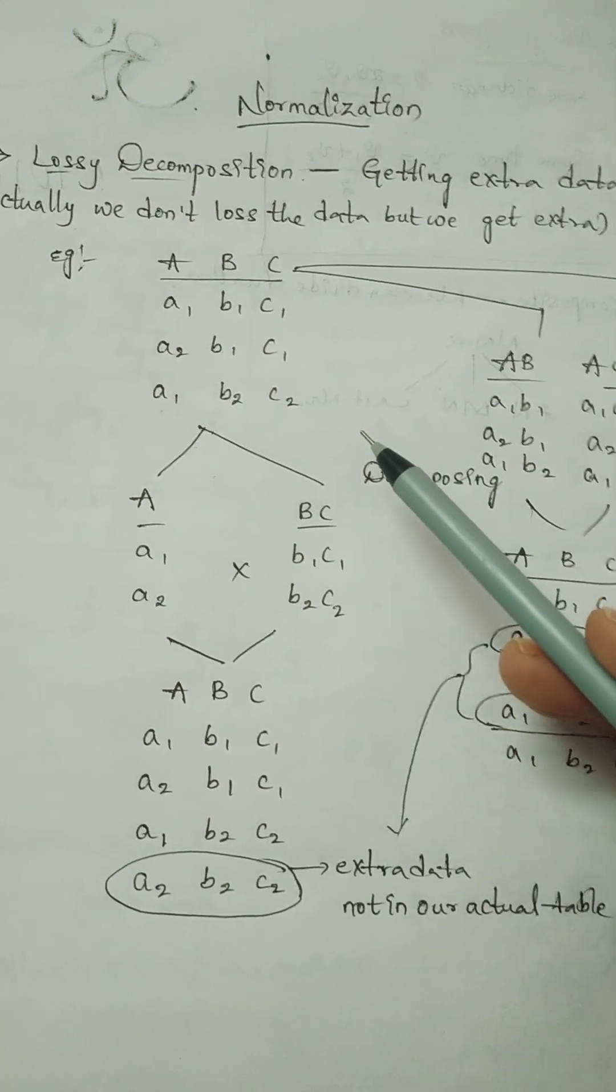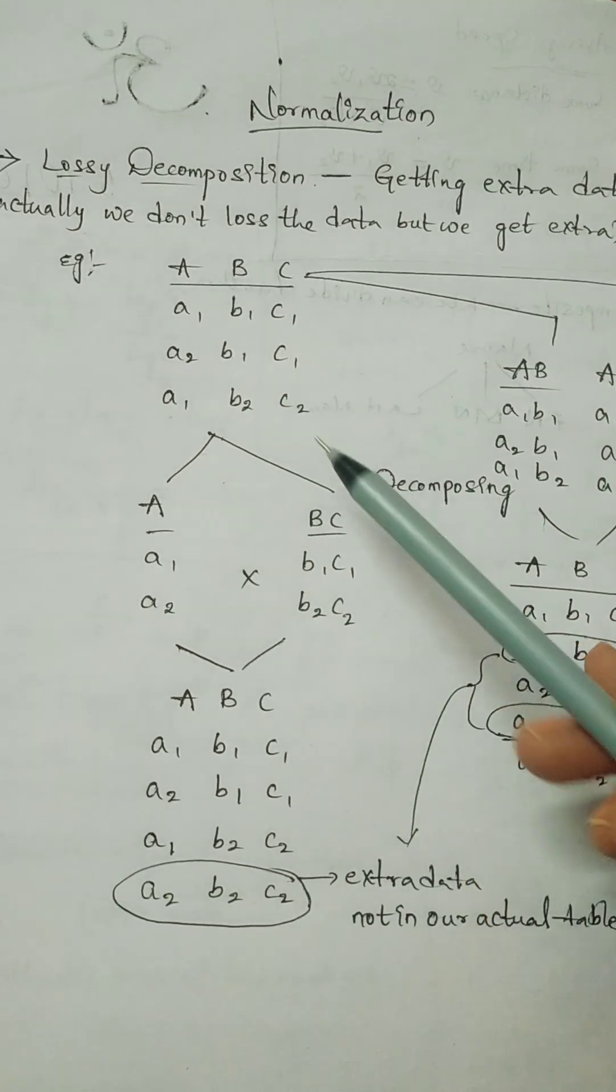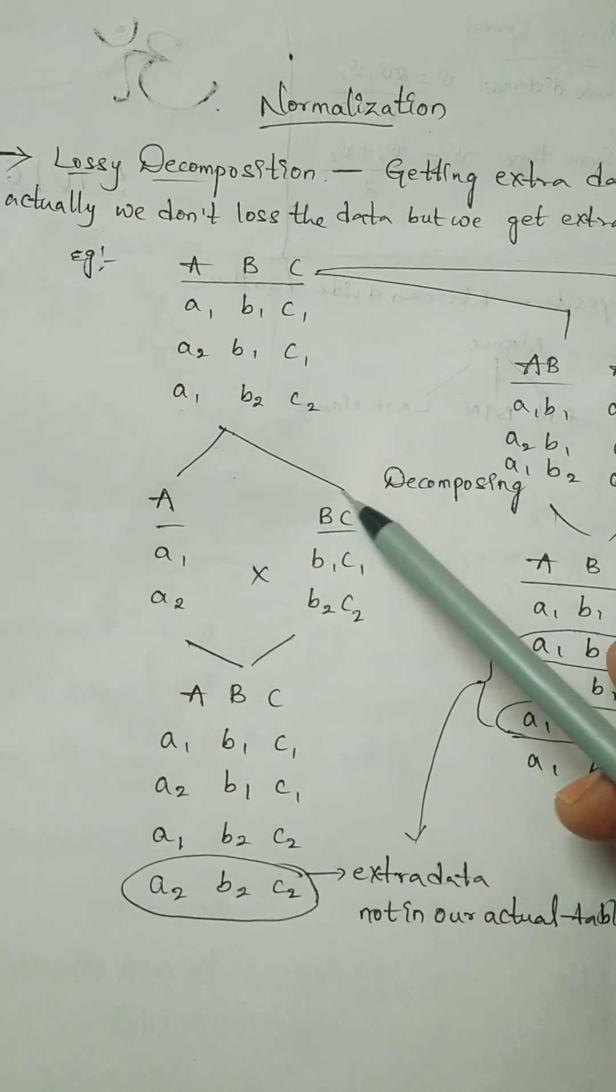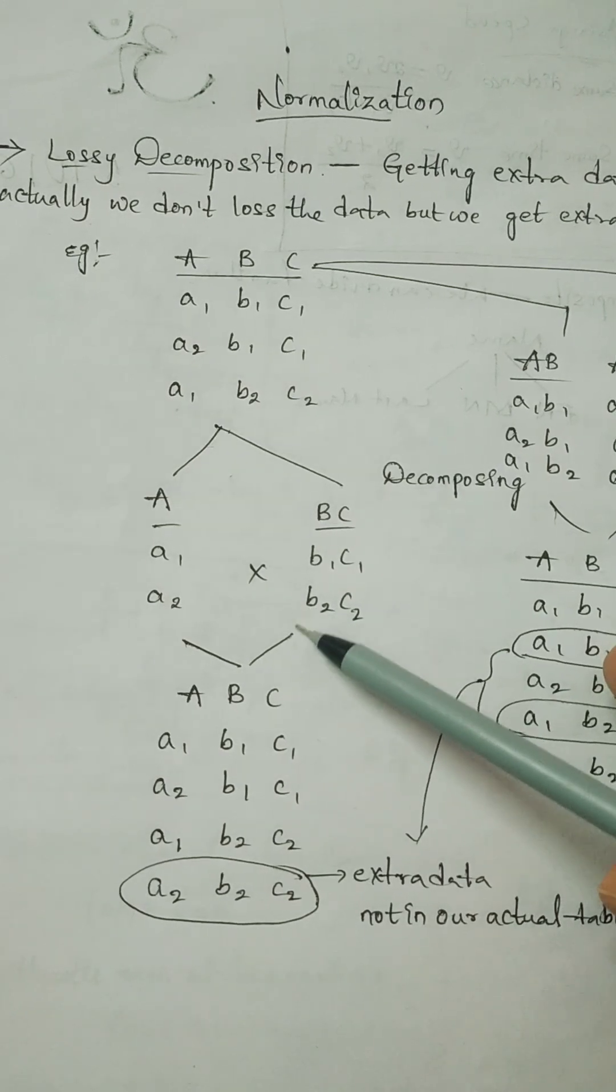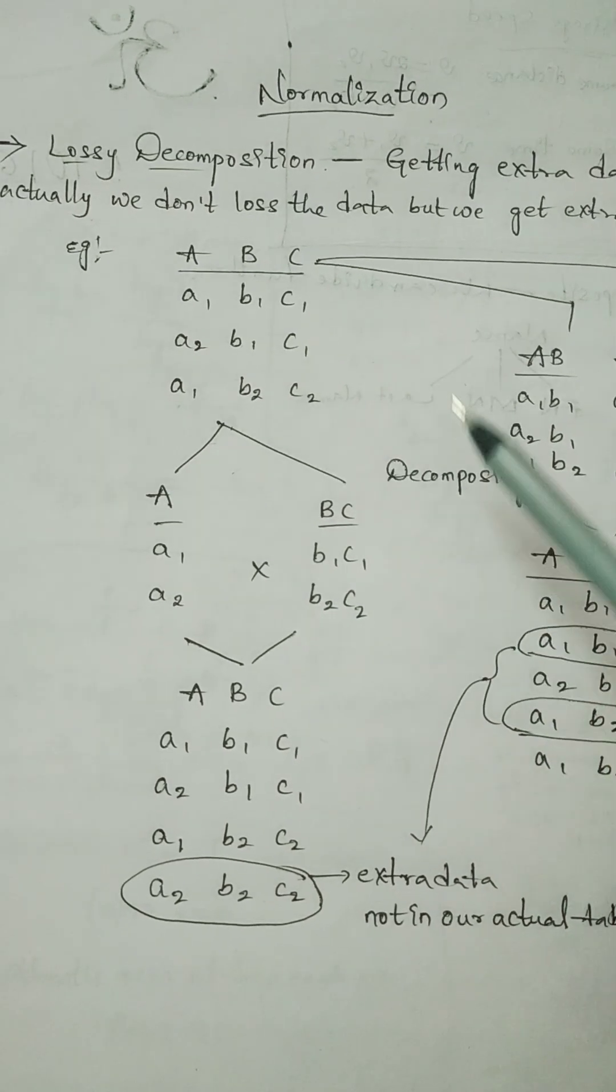Lossy decomposition achievement. Whenever we divide the data into smaller parts, we get some extra data that is not present in our actual data. Here you can see.